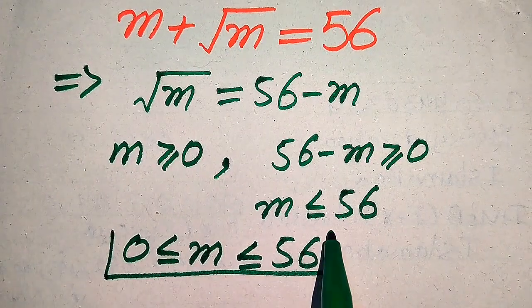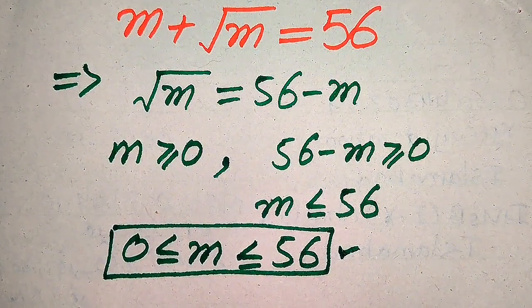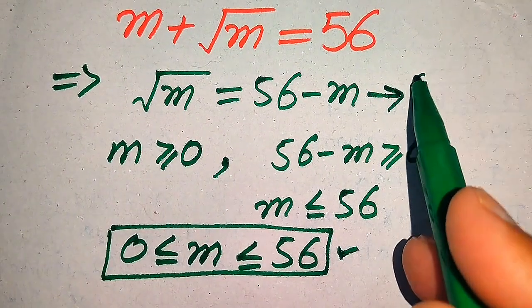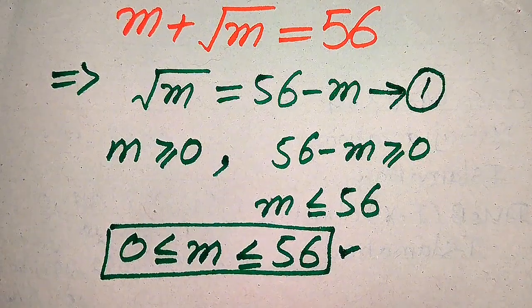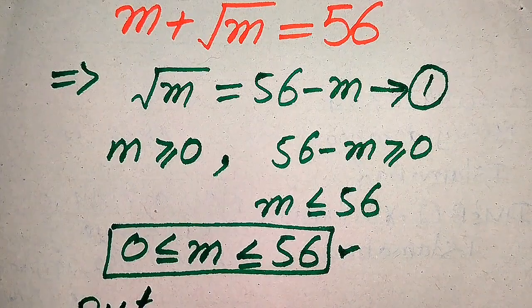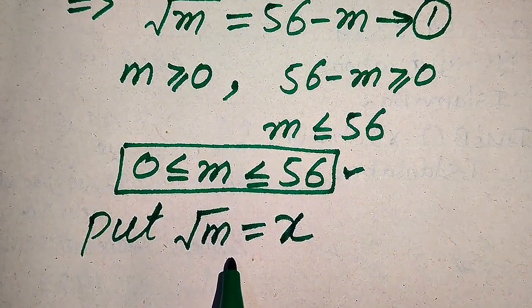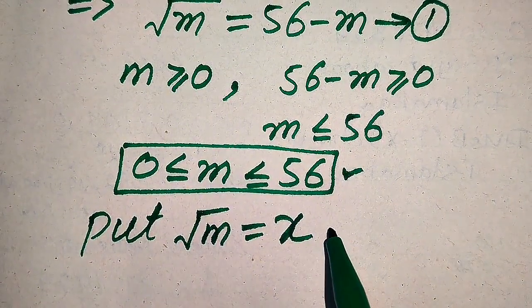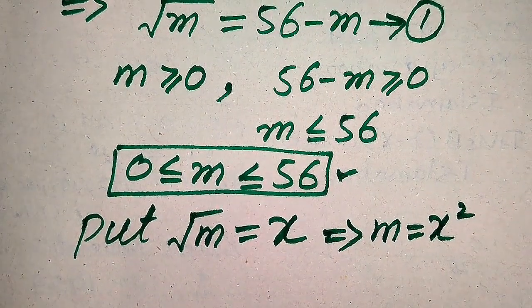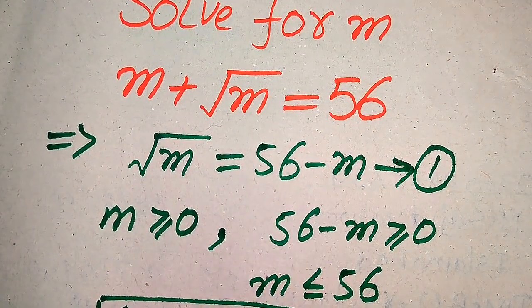When we combine these two inequalities we get 0 is less than or equal to m is less than or equal to 56. This is the domain of the given question — the solution of the given problem lies in this interval. Now we make a substitution: we take square root of m equals x, which implies m equals x squared.